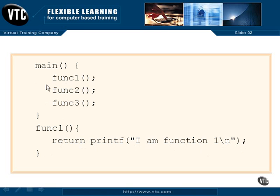Our processing comes back up, function two gets called and executed, processing will go down to function two, and when it's finished we'll come back to function three, perform it, and then we'll run off the end of main. We could put an exit there or a return in main just as easily to return back to the operating system.